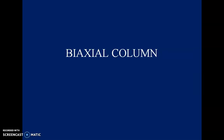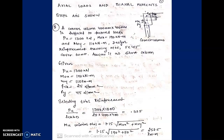Next we look at the biaxial column. In the uniaxial column there was only one moment; in the biaxial column, moment comes from both directions. This case generally arises for a corner column. Steps are given in standard textbooks; we will directly see how to apply those steps. For a corner column, beams come from both directions.